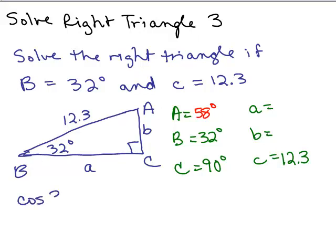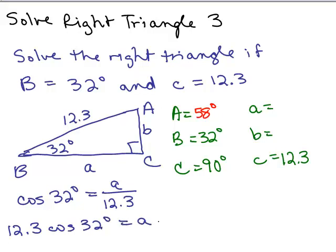The cosine of B, or in this case 32 degrees, has got to be a over the hypotenuse, which is 12.3. This is just an equation with one variable missing. To solve for a, we can multiply both sides by 12.3. So I would have 12.3 times cosine of 32 degrees, and that will give me my side a. Make sure it's in degree mode. So I'm going to do 12.3 times the cosine of 32 degrees. Let's round this to the nearest tenth. I came up with 10.4. So a is approximately 10.4.